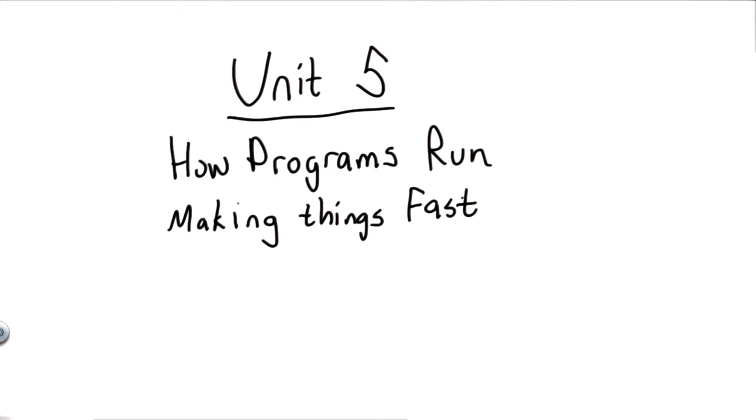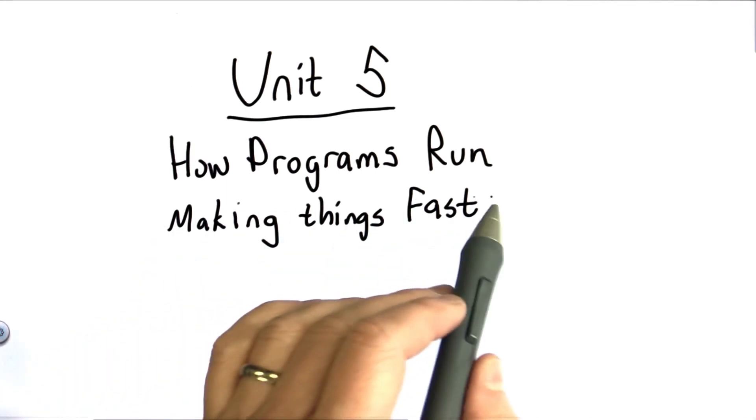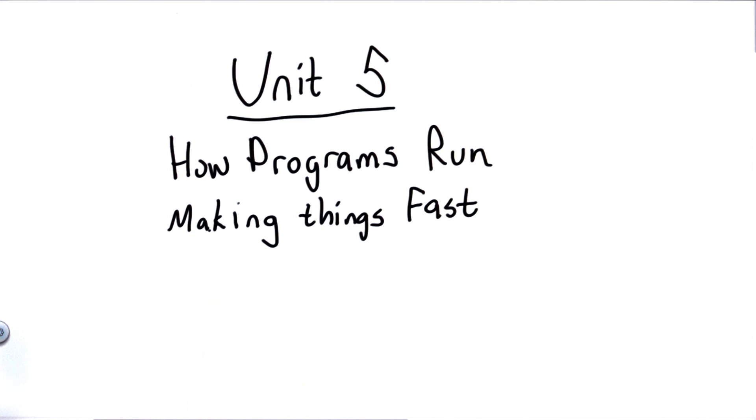So welcome to Unit 5. The main topic for this unit is trying to understand the cost of running programs. So far, we haven't really worried about this. We've been very happy to write code. If we get the correct result, that's a great thing. But once we start making programs bigger, worrying about programs that do more things, running on larger inputs, we have to start thinking about the cost of running our programs.